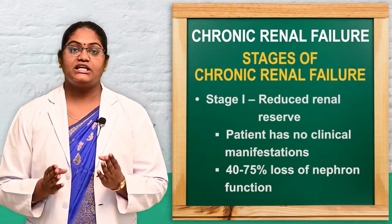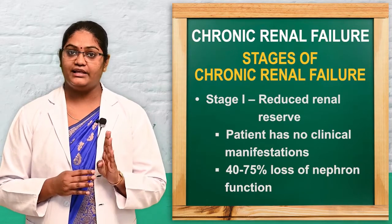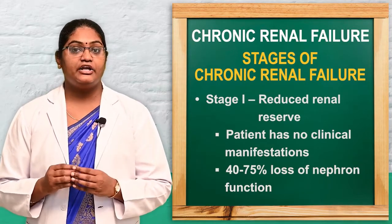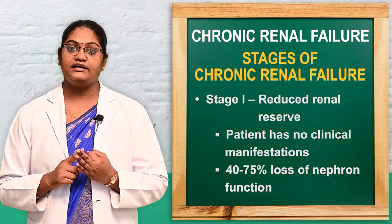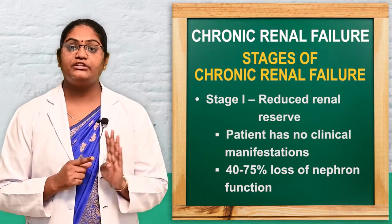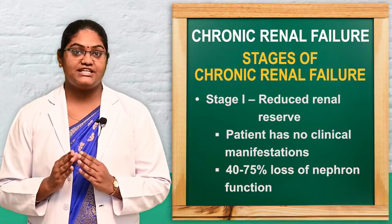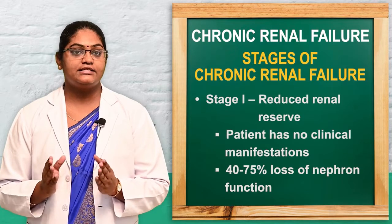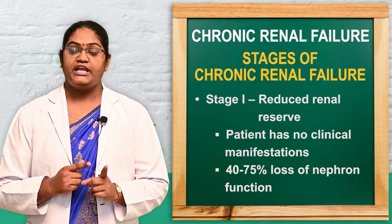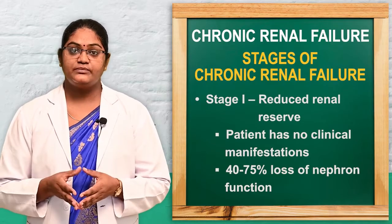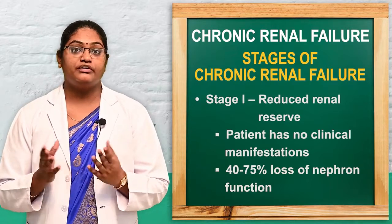Next we discuss the stages of chronic renal failure. There are mainly four stages: the first is reduced renal reserve, the second is renal insufficiency, the third is renal failure, and the fourth is end-stage renal disease. In the first stage — reduced renal reserve — the client has no symptoms, and there is 40 to 75 percent loss of nephron function.